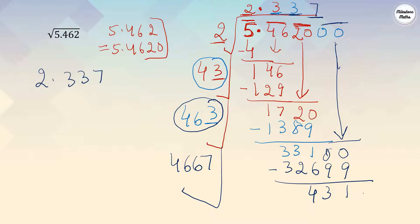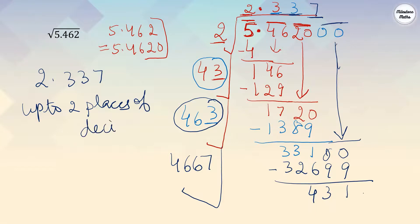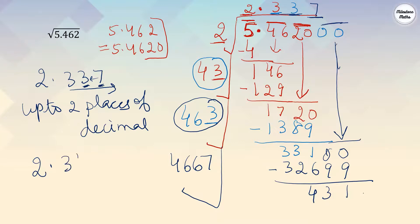To give the answer correct to two decimal places, find it to three decimal places, then round. The third decimal digit is 7, which is greater than or equal to 5, so we round up — the previous digit 3 becomes 4. Therefore the square root of 5.462 is approximately 2.34.